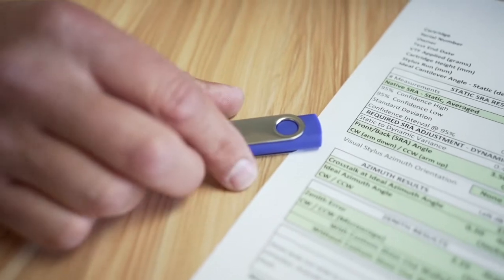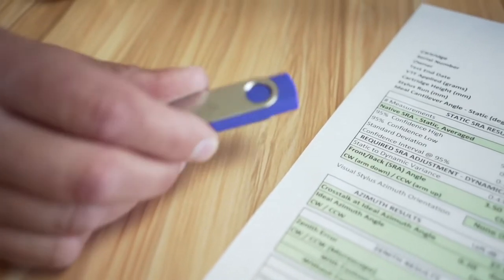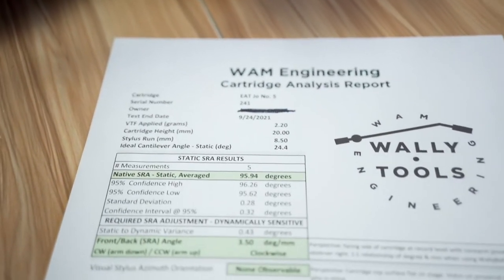So along with the cartridge analysis comes a thumb drive, which includes the photos that we used to take measurements of the angular relationship between your cantilever and your stylus and the stylus and the groove. The report itself, keep that for posterity, for reference in the future. If ever you do need new shims made, we can always do that for you.